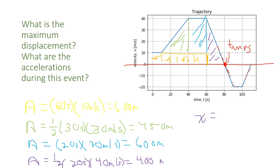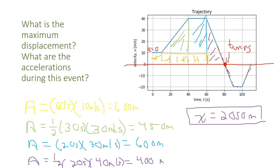All I have to do is add them up, so our total displacement will be 2050 meters. Now let's take a look at the accelerations. We went velocity to displacement using areas; when we go velocity to acceleration those are slopes. This first section is a flat line, so rise over run is zero — acceleration is zero. The green section has a rise of 30 meters per second over a span of 30 seconds, giving an acceleration of 1 meter per second squared.